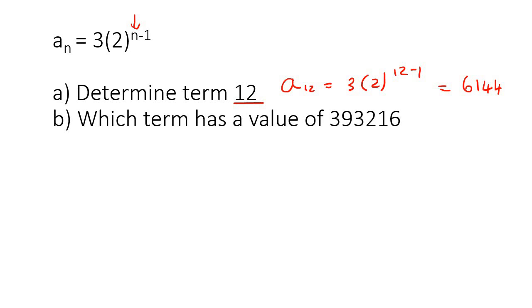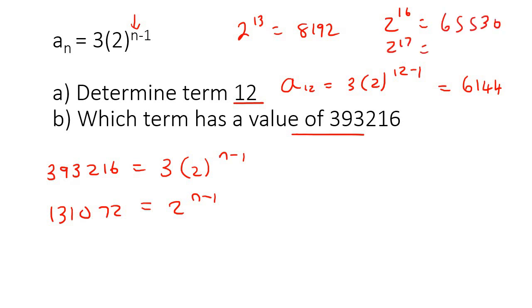Now it says which term has a value of 393216. So you can say 393216 equals to 3 times 2 to the N minus 1, because now they're giving us the value. So that goes there. And so what you would do now is divide both sides by 3, and that's going to give you 131072. Then you need to try to break this number down. So let's start with 2 to the 13. So go 2 to the power of 13 on your calculator. Okay, that's too small. Try 2 to the 16. That's 65536. Let's go 2 to the 17. If you say 2 to the 17, ah, there we go, 131072. So this can be written as 2 to the 17. Now those two numbers are both the same, so you can ignore them. And then you end up with N minus 1 is equal to 17. If you solve for N, it would be 18.